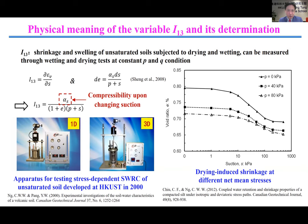I1-3 in the compliance matrix is the ratio of incremental volumetric strain to incremental suction. This variable can describe shrinkage and swelling of an unsaturated soil subject to wetting and drying. Based on the tests shown on the right-hand side, the value of I1-3 can be determined.